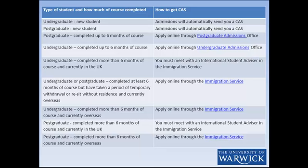If you are an undergraduate student and have completed up to six months of your course, then you need to request a CAS online from the undergraduate admissions office.